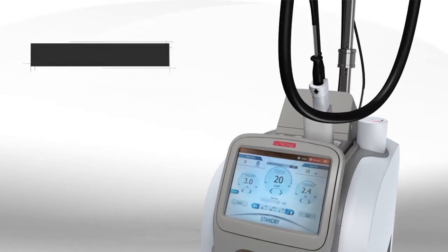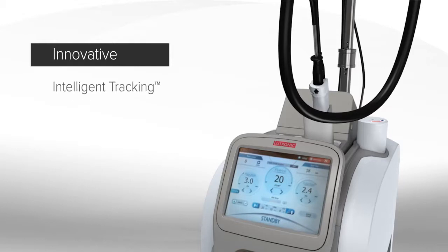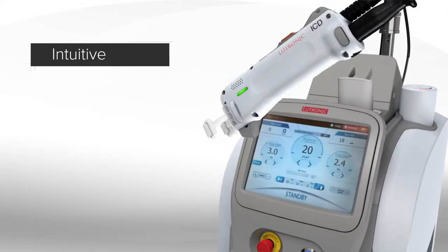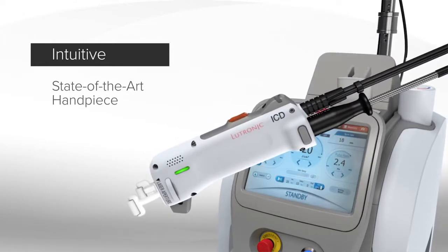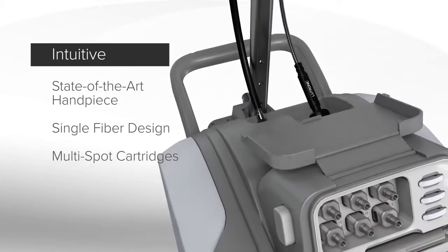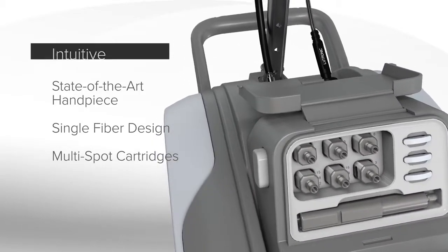Clarity 2 is innovative with its unique intelligent tracking and temperature sensing capability. It's intuitive with a state-of-the-art handpiece and single fiber design supporting smart multi-spot cartridges ranging from 2 to 25 millimeters.